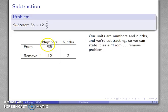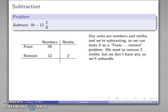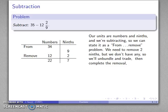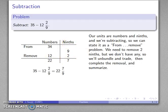I want to remove 12 from 35—not a problem. But I do want to remove 2 ninths from... I have nothing here, so I have to do something to address that problem. I'll unbundle. I'm going to take that 35 and break it up a little bit. There's still 35, but now I'm going to trade that 1 away. 1 becomes 9 ninths. Now I have: 12 I can remove from 34, 2 I can remove from 9. What do I have left? 22 and 7. Finally, I want to summarize this in the same form that the question was asked in. This is 22 and 7 ninths.